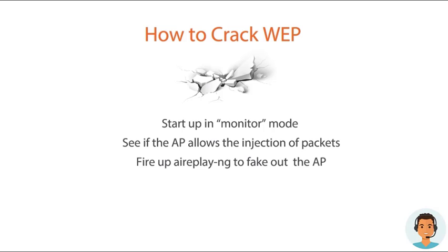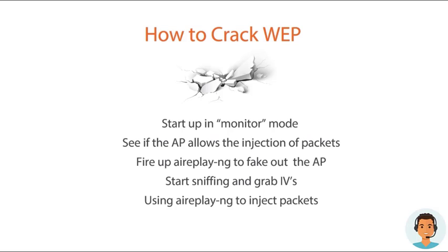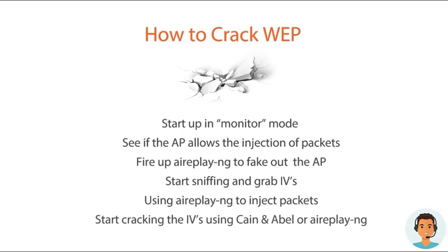I'll use a source MAC address that's already associated with the AP — I'll get that through sniffing — so that the AP accepts the packets. Any type of injection will actually fail at this point because even though the MAC address I've listed is associated, my MAC address has not been associated with the AP. So I'll start up a sniffing program and grab as many IVs as I possibly can — at least enough to break the base key. To get a bunch of IVs quickly, I'll turn on Aireplay again into ARP request replay mode, which listens for ARP requests and reinjects them back into the network. The access point usually rebroadcasts the packets, generating new IVs, and meanwhile I'm collecting those.